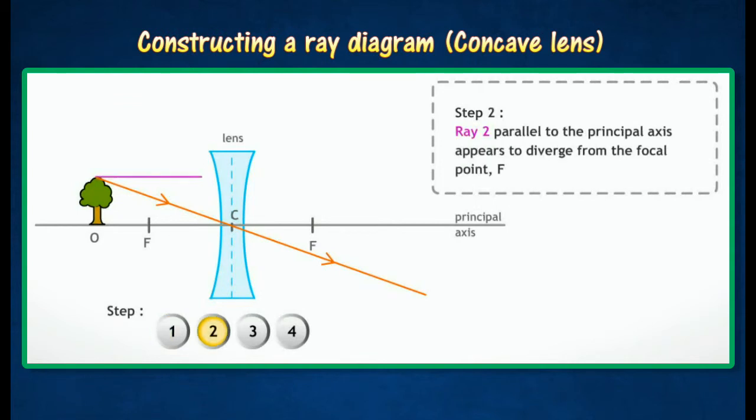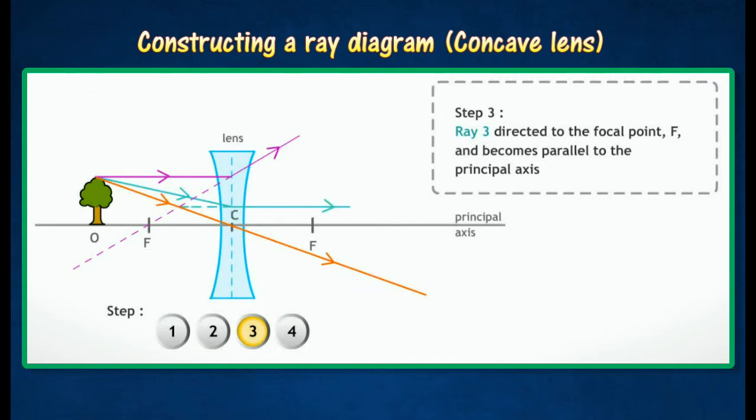A ray of light parallel to the principal axis is refracted and appears to come from the principal focus F. A ray of light travels towards focus point F is refracted parallel to the principal axis.